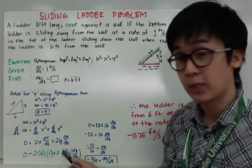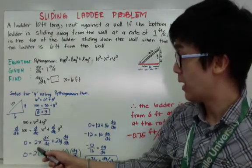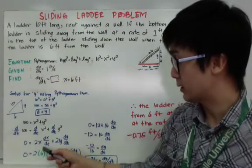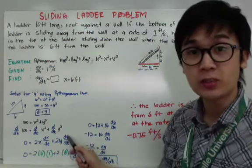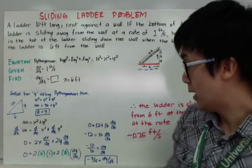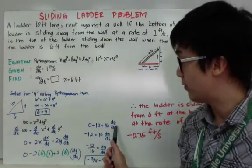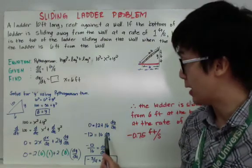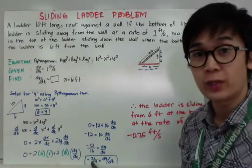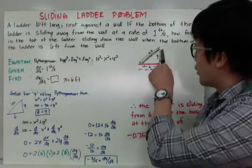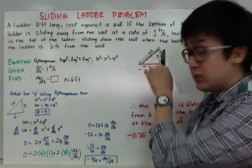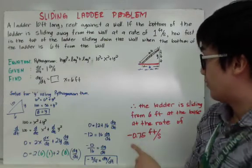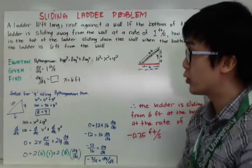Ngayon na ito na yung derivative function nyo, madali nang mahanap yung dy over dt. Obvious na na masosolve nyo na yung problem by substitution. Alam ko yung value ng x, alam ko yung value ng y — kasi andun yun sa given, 10 at saka 8. Alam ko rin yung dx over dt kasi given din siya. Ang hinahanap ko yung dy over dt, so masosolve ko na yung related rates problem. By substitution, I have 0 equals 12 plus 16 dy over dt by simplifying it. Get rid of 12 by subtracting 12 on both sides, tapos kailangan yung dy over dt by itself, so you divide both sides by 16. So, dy over dt is equal to negative 3 over 4. Na-solve nyo yung related rates problem — the ladder is sliding from 6 feet at the base at the rate of negative 0.75 feet per second.